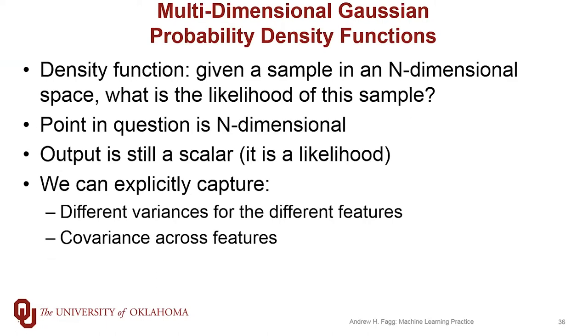Multidimensional Gaussians are a tool that allow us to get at these issues. So these are density functions. The input to the density function is an n-dimensional sample, so an XI in our lingo. And what this density function generates is a scalar likelihood. So it says, what is the likelihood of this particular sample that we've observed? And these models actually allow us to capture these new features that we'd like to be able to handle. So let's go ahead and look at a little bit of math around these Gaussian PDFs.